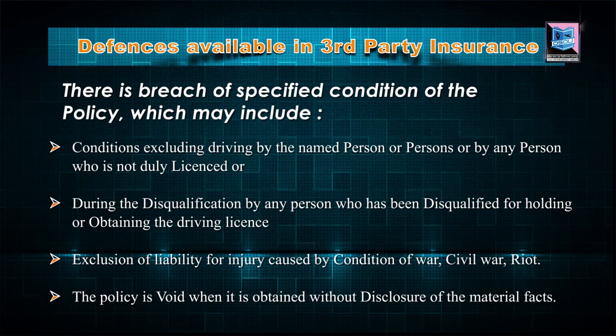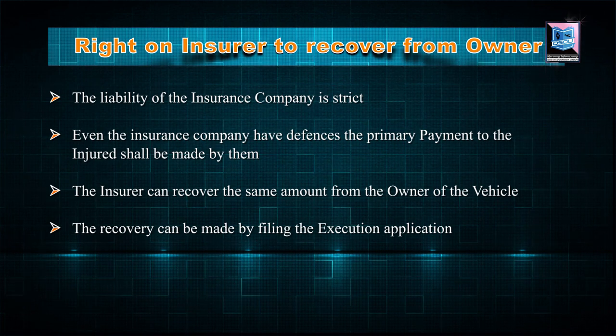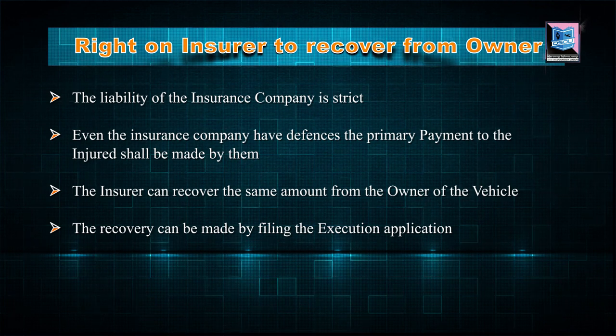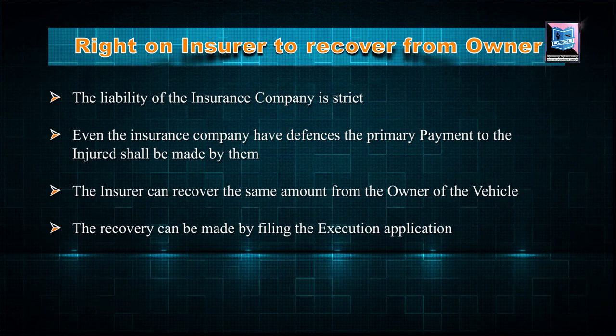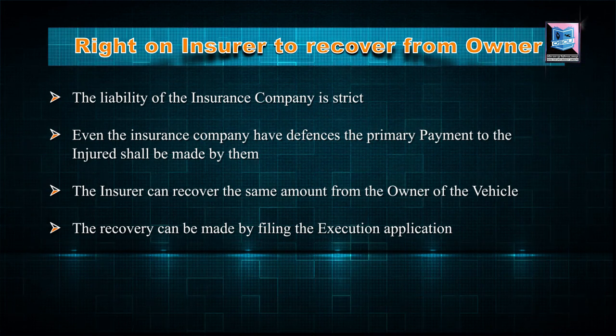The right of the insurance company to recover from the owner: in certain cases, when the insurance company has paid the amount to the person affected by the accident, it can recover the same amount from the owner. The liability of the insurance company is still strict — even if they have a defence, they must make the primary payment to the injured and cannot escape this. They can then recover the same amount from the owner of the motor vehicle by which the accident took place, by filing an execution application.